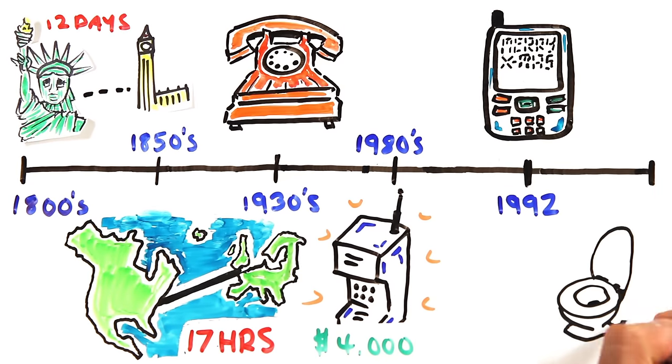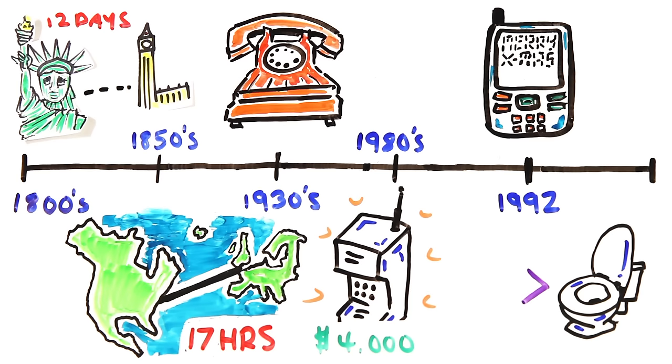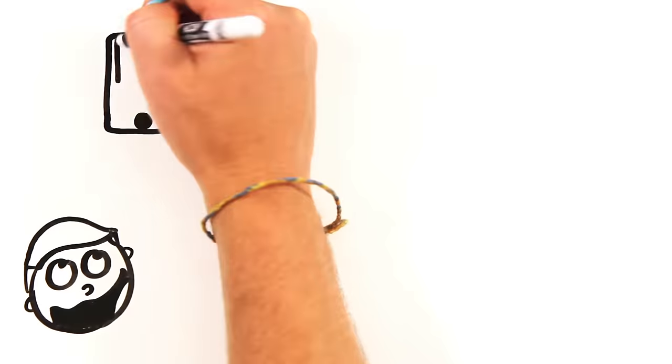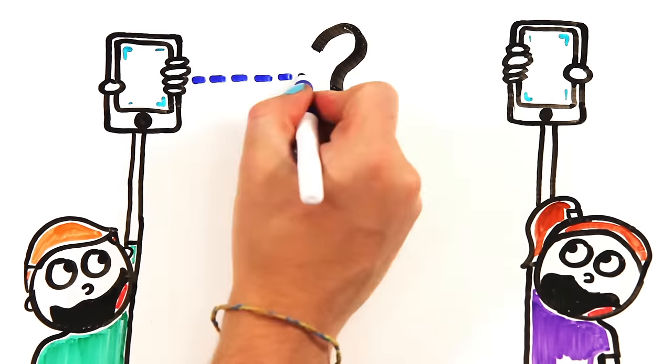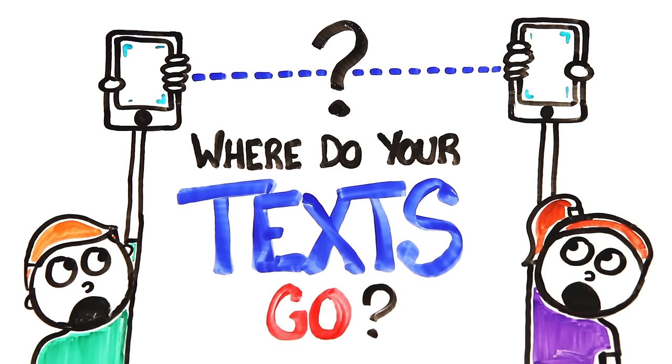And today, more people have mobile phones than toilets, with around 23 billion text messages being sent every day. But how the hell do text messages even work?